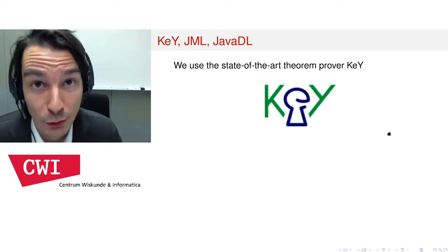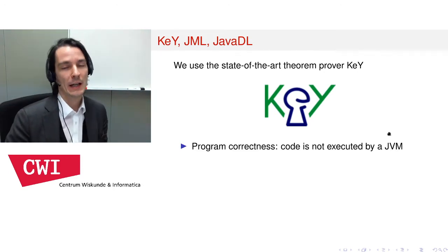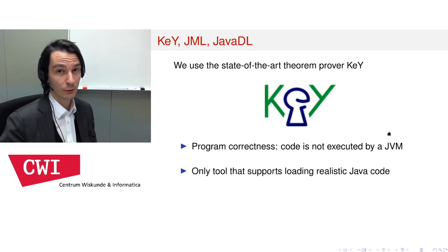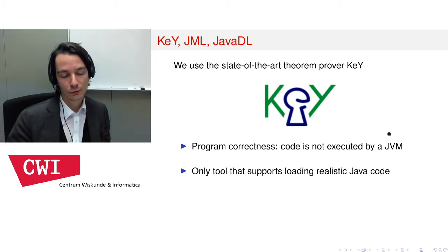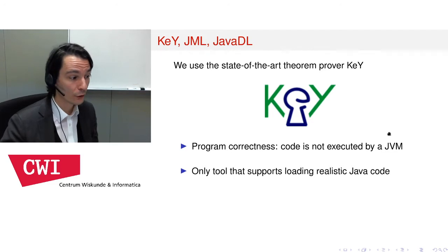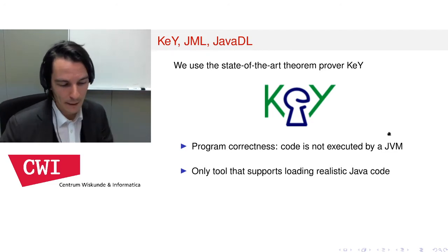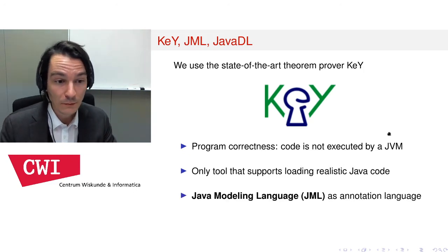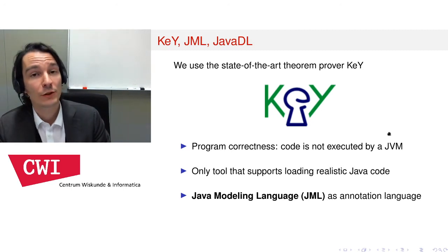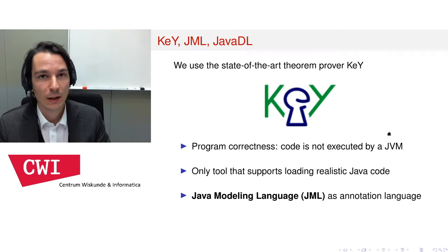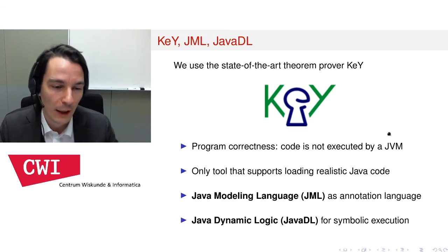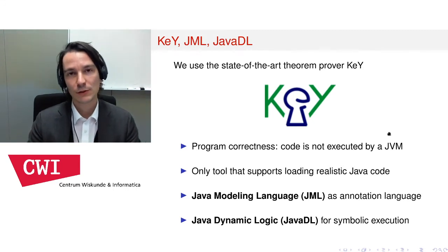We use the state-of-the-art theorem prover KeY. KeY is a theorem prover, so it does not execute the program under analysis. It is the only tool, as far as we know, that can actually load Java code, so it has enough features of the language — such as exceptions, control flow, and interruption — to load the actual implementation of the Java collection framework as provided by OpenJDK. It uses the JML language, the Java Modeling Language, to annotate methods with contracts, specifying pre- and postconditions. Moreover, it uses Java Dynamic Logic to symbolically execute program fragments, allowing static reasoning about the correctness of Java programs.